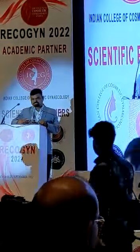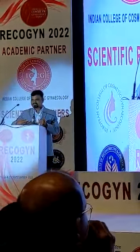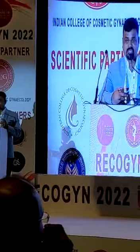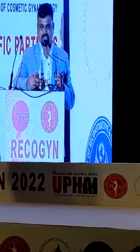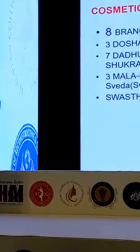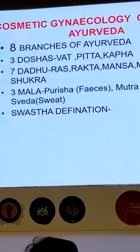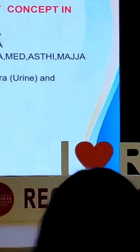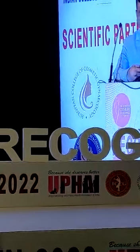Cosmetic Gynecology perception in Ayurveda is dependent on the following factors: Three Doshas — that is Vata, Pitta, Kapha; Seven Dhatus — that is Rasa, Rakta, Masa, Veda, Aski, Maja, and Sukra; and Three Malas — that is Purisha (feces), Mutra (urine), and Sweda. All these are very important while treating Cosmetic Gynecology in Ayurveda.